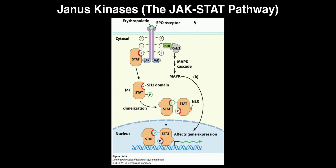This pathway is often abbreviated to the JAK-STAT pathway. The JAK stands for Janus kinase, and the STAT is a protein that becomes activated when the JAK becomes activated. Typically, the JAK-STAT system is reserved mostly for immunological functions. A lot of cytokines actually signal through a JAK-STAT pathway. But we also see EPO, or erythropoietin, which signals through the JAK-STAT pathway as well.